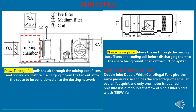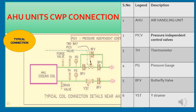What is DIDW and SISW fan? A double inlet double width (DIDW) centrifugal fan gives the same pressure rise and has the advantage of a smaller overall footprint, requiring only one motor, but delivers double the flow compared to a single inlet single width (SISW) fan. We have now seen the AHU specifications and the two different types of AHU fans.